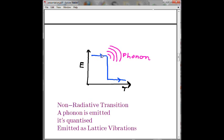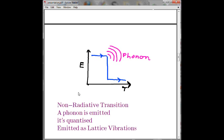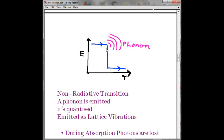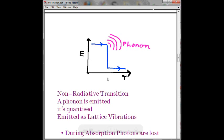The next interaction is a non-radiative transition, in which a phonon is emitted. A phonon is lattice vibrations — i.e., sound — and it is also quantized. But you won't get any light out of this transition. There is still a finite probability that this interaction will happen.